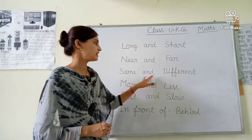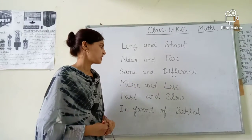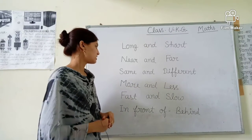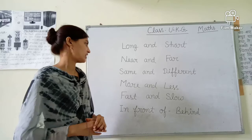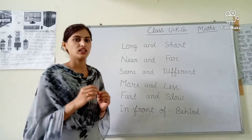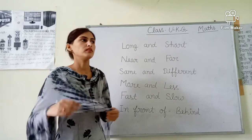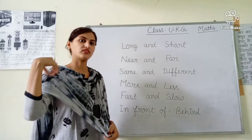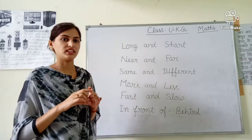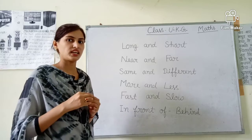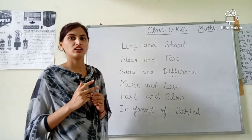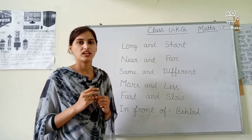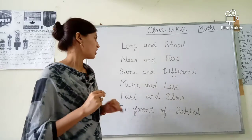Same and different. Same means hota hai ek tarah ka jaisi hote hai. Jaisi koi ladki hai, dho ek tarah ka dress paheni ria ti, tho ho gaya same. Isse koi juraab bacho hote hai, tho ho gota hai same.